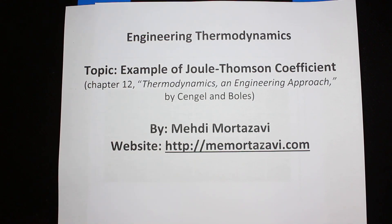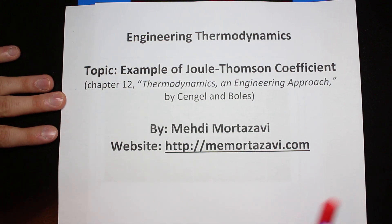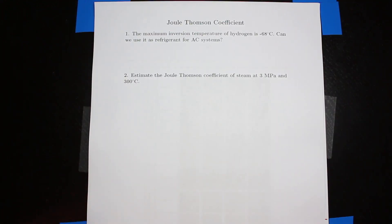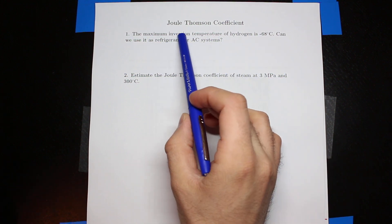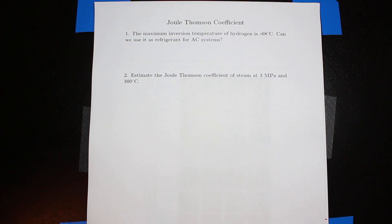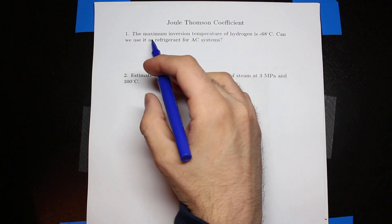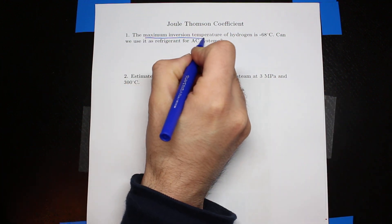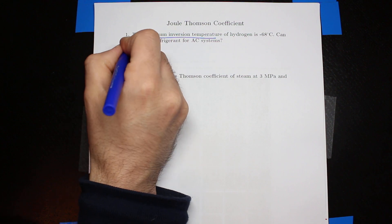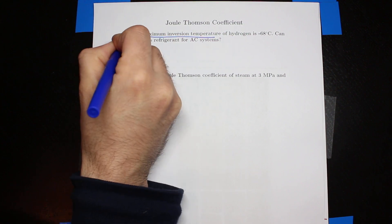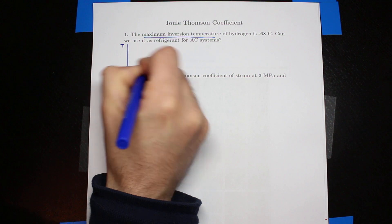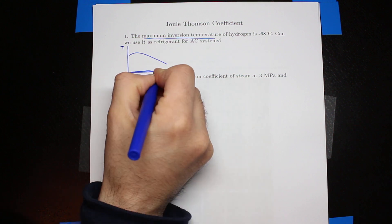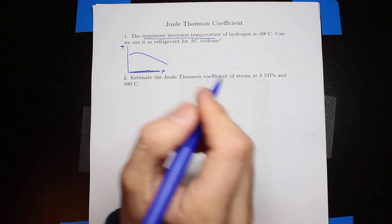Let's do two questions about the Joule-Thompson coefficient. The first question asks whether we can use hydrogen, which has a maximum inversion temperature of negative 68 degrees C, for AC applications. The maximum inversion temperature is shown on a plot of temperature versus pressure with the constant-enthalpy line for hydrogen.